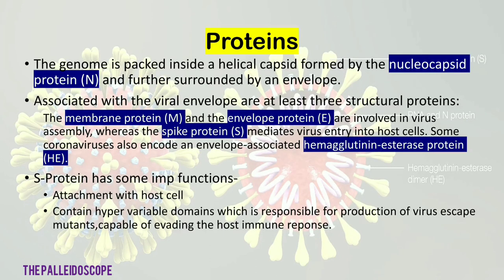The proteins present are mainly of four types. The genome is packed inside a helical capsid formed by the nucleocapsid protein N, surrounded by an envelope. Associated with the viral envelope are at least three structural proteins: protein M and envelope protein E are involved in virus assembly, whereas spike protein S mediates virus entry into the host cell. Some coronaviruses also encode an envelope-associated heme agglutinin esterase protein, HE.